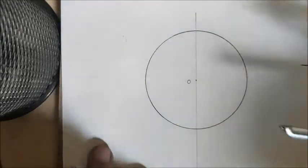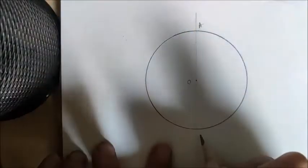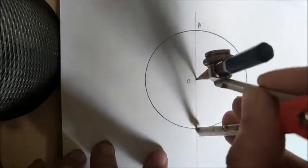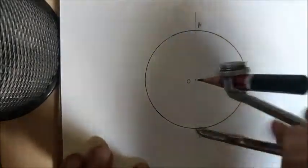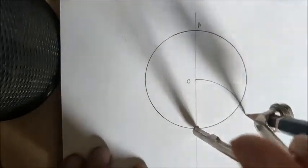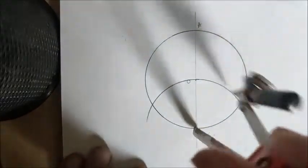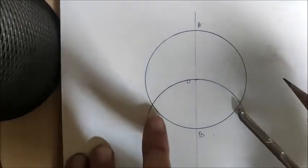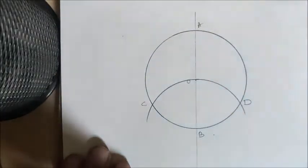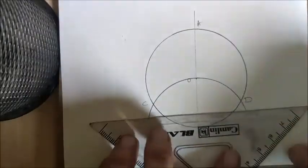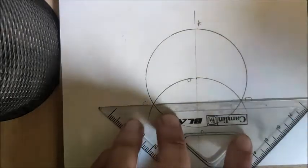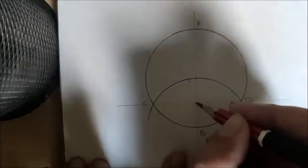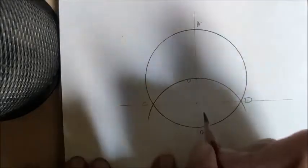We'll mark these points A and B for understanding purposes. AB is the diameter. Now with the distance of the radius BO, keep the pointer on B and draw a semicircle. This semicircle intersects our original circle at two points. We'll name these points C and D. Now we will join CD. We have joined CD, and now we get this point which is the center of CD which lies on our vertical diameter. Let's call it M.